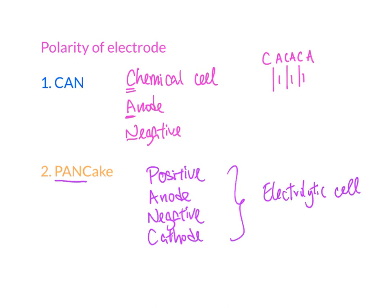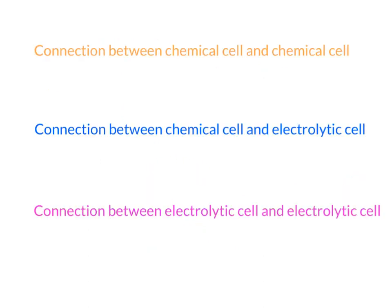So one mnemonic is for the chemical cell and the other is for the electrolytic cell. For the electrolytic cell, the positive terminal is the anode and the negative terminal is the cathode. This is totally opposite to the chemical cell — in a chemical cell, anode is negative, but in an electrolytic cell, anode is positive.